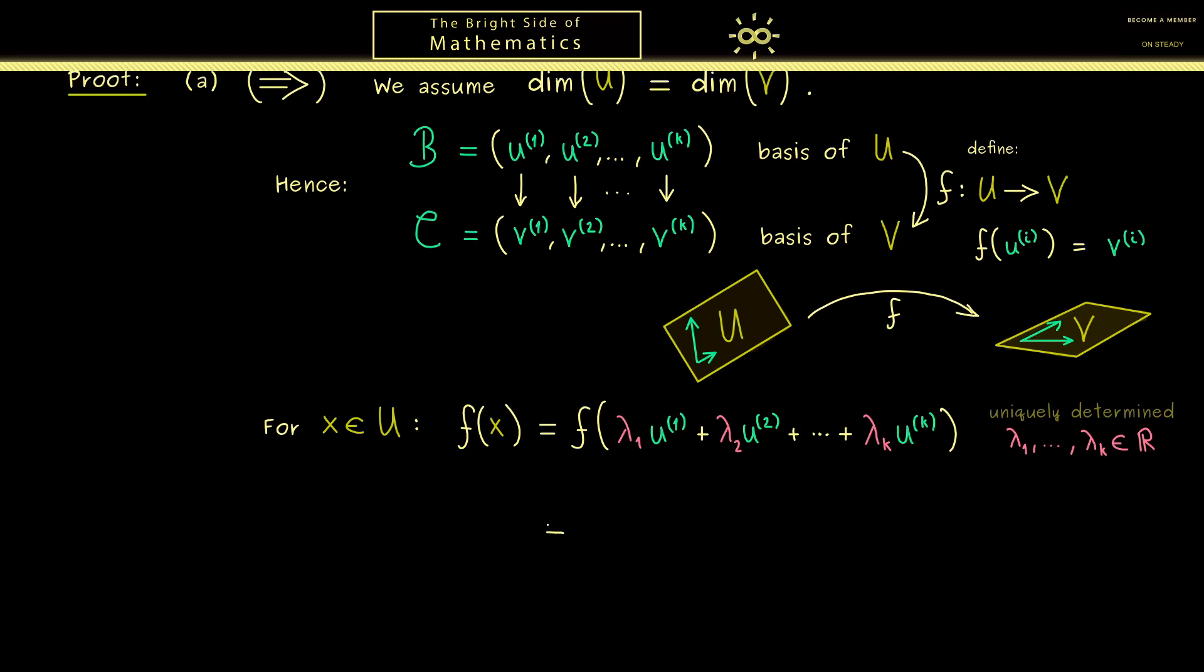So more precisely in the first step we can pull out the addition and then in the next step we can pull out all the scalars. And then what you should see is what remains is just a new linear combination. And you see it's given by the images of the basis vectors. However these we have already defined as the new basis vectors in V. Hence what you should see is now F of X is already completely determined just by this definition here.